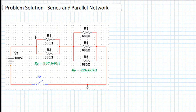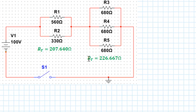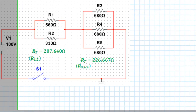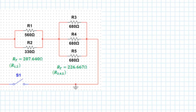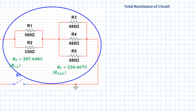Now we have the effective resistance of both parts of the network. We need to find the effective resistance of all the resistors together. It can be slightly confusing because we've ended up with two RTs, so let's clarify: one RT is the combination of R1 and R2, and the other is the combination of R3, R4, and R5. We won't reuse RT for those values. Now because we have resistors in series, we use the formula RT = R12 + R345.